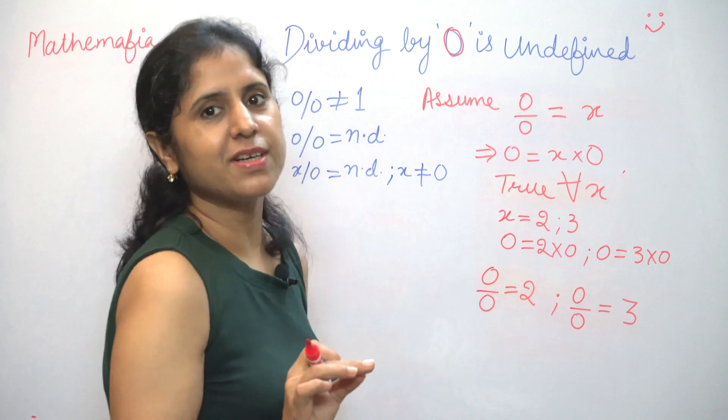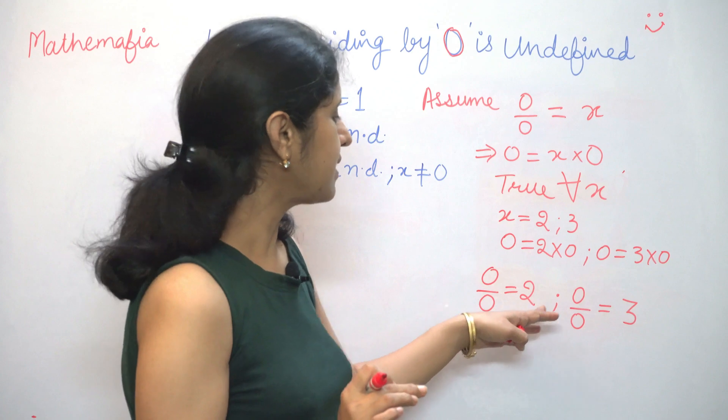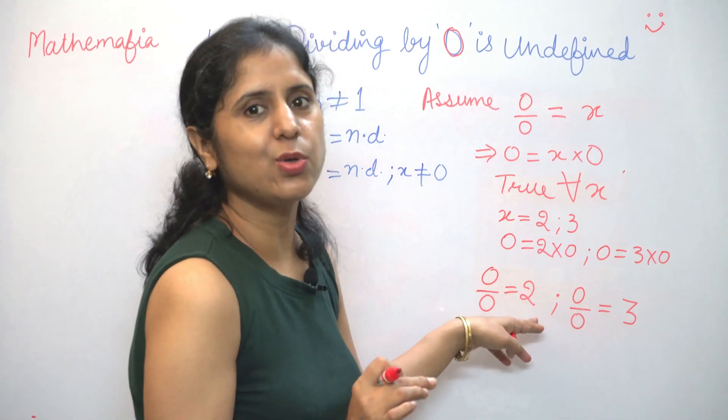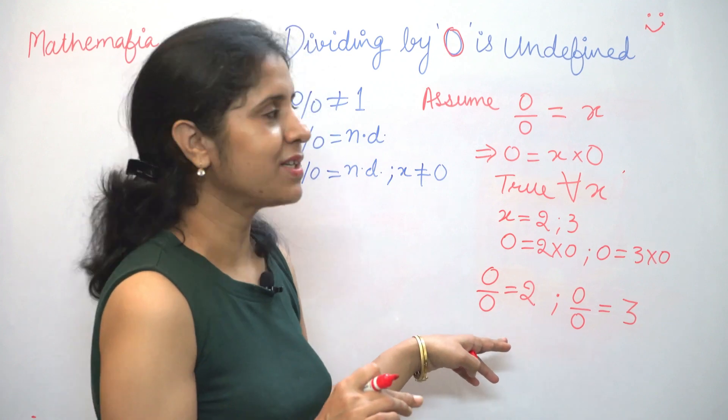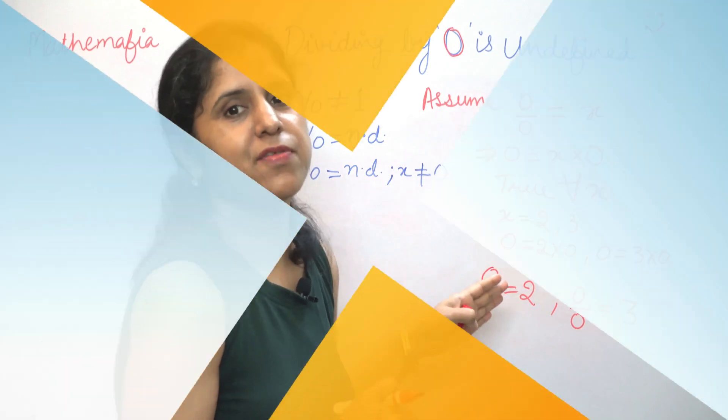Now, we have reached a contradiction again. From here, 0 by 0 has multiple values. In this case, 2 and 3. And also, from here we can derive that 2 is equal to 3 which is again a contradiction. So our assumption was wrong and 0 by 0 has to be undefined.